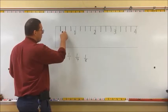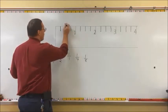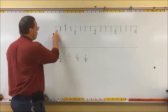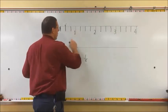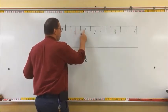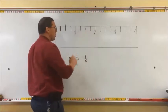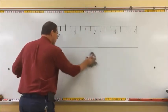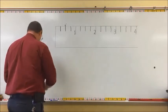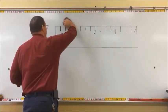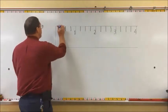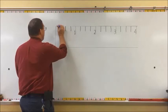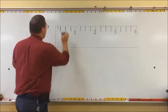Even though it is two-fourths, two-fourths is actually a fraction that can be reduced to one-half. So this line right here is always the one-half-inch line. We have one-fourth of an inch, one-half of an inch, three-fourths of an inch, one inch, one and one-fourth, one and one-half, one and three-fourths, two inches. So then we're going to break it up even more - now we're going to break it up into eighths, and we're going to make the lines a little bit shorter than the fourths.